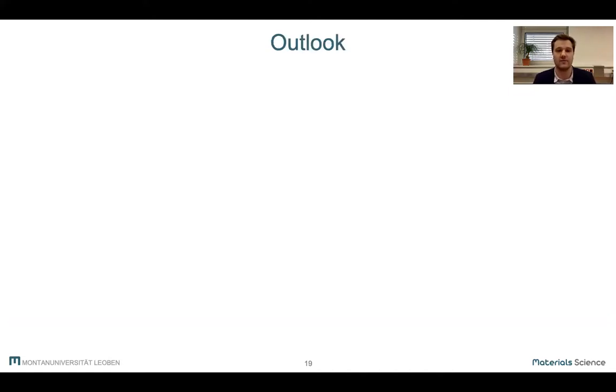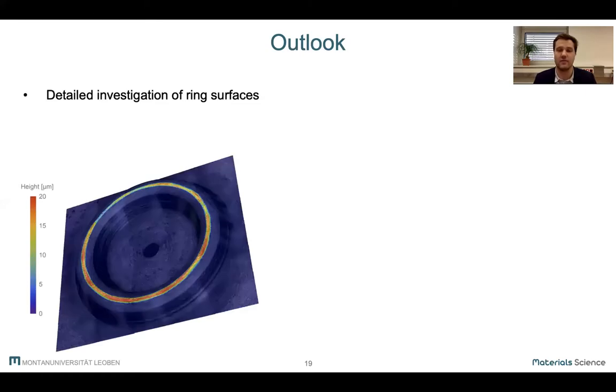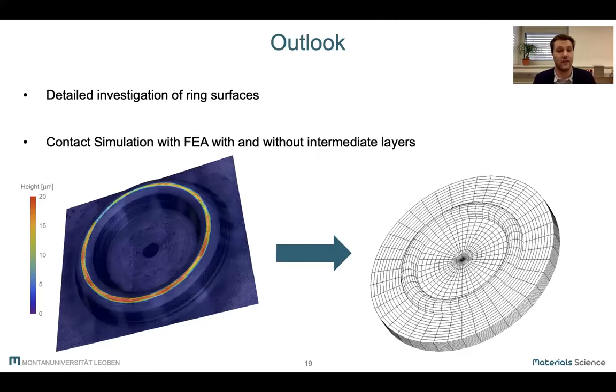The next steps will be to take a closer look at the surface of the loading and supporting rings, as we did here with a laser confocal microscope, and then transfer this data into a finite element analysis program to more accurately simulate a real situation. Also, we are in the process of testing more materials with different geometries and different intermediate layers to see if our assumptions will still hold true.